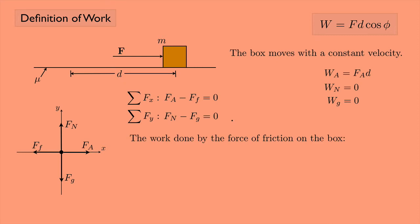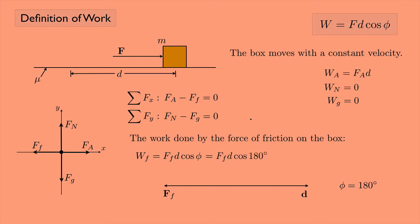The work done by the force of friction W_f equals F_f times D times the cosine of phi. The friction force points to the left and the displacement points to the right, so the angle is 180 degrees. The cosine of 180 degrees is negative one, giving negative F_f times D. Using the friction formula F_f = mu times the normal force, and since the normal force equals the weight mg, this becomes negative mu·m·g·d.